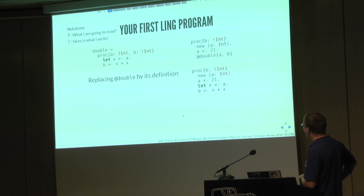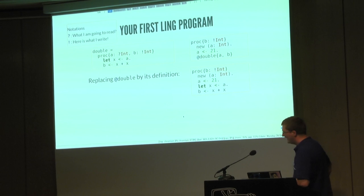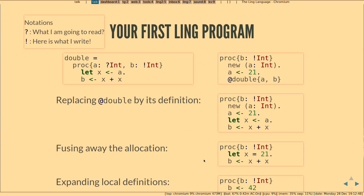Notice the equal sign — it means it's a definition, so we can always replace 'double' by its definition. We get the following program by inlining the definition of double. Here we see the allocation, the assignment, the write, and then the read. This is a trivial case where fusion can apply: it replaces this allocation, write, and read by a single local definition. These local definitions are at the static level and will be expanded away, giving us a final program which is just writing 42 directly into B. With this simple program we've seen how to declare processes, their channels, allocation, read, and write.